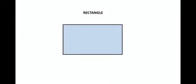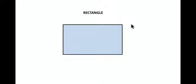Next, we have a rectangle. A rectangle has four sides; two of the opposite sides are equal — this side is equal to this side, and this side is equal to this side. The longer one is called the length and the shorter one is called the breadth. So a rectangle has two lengths and two breadths.